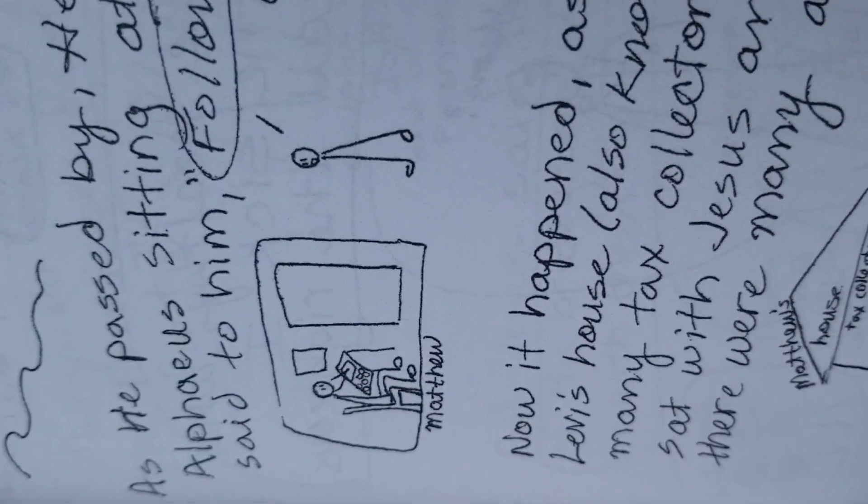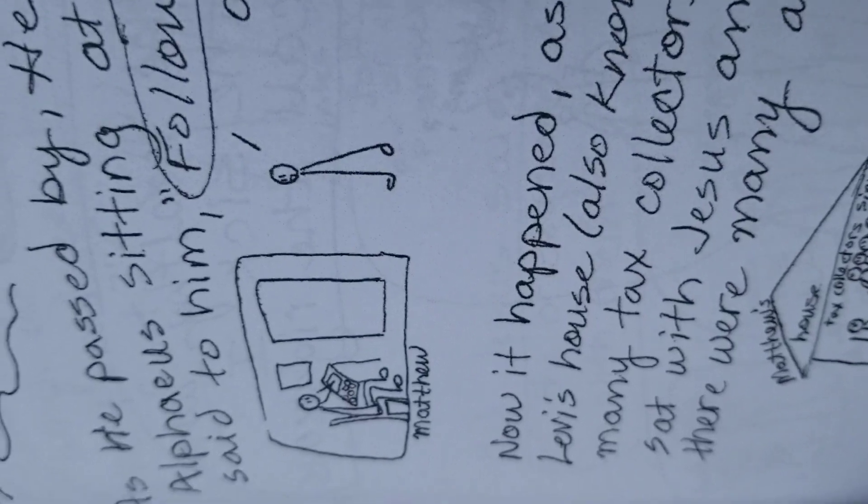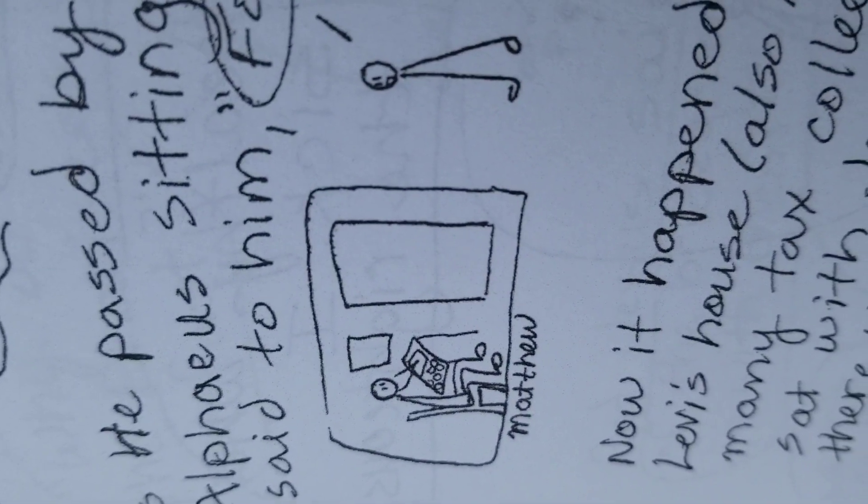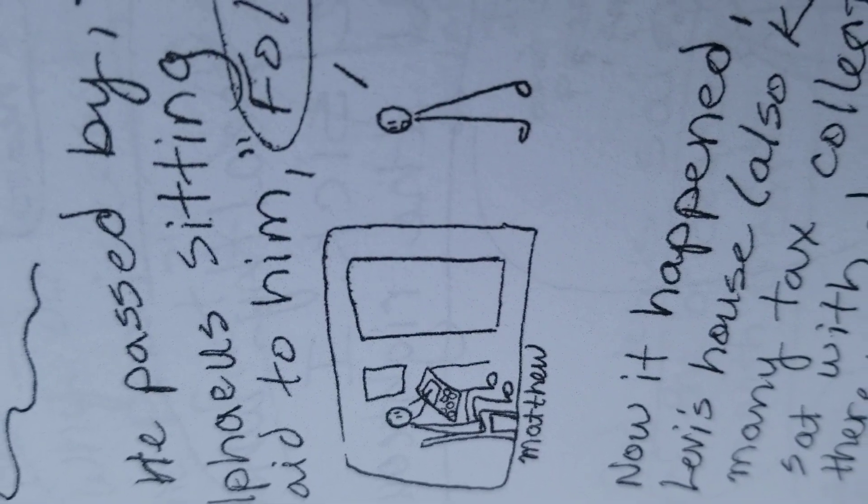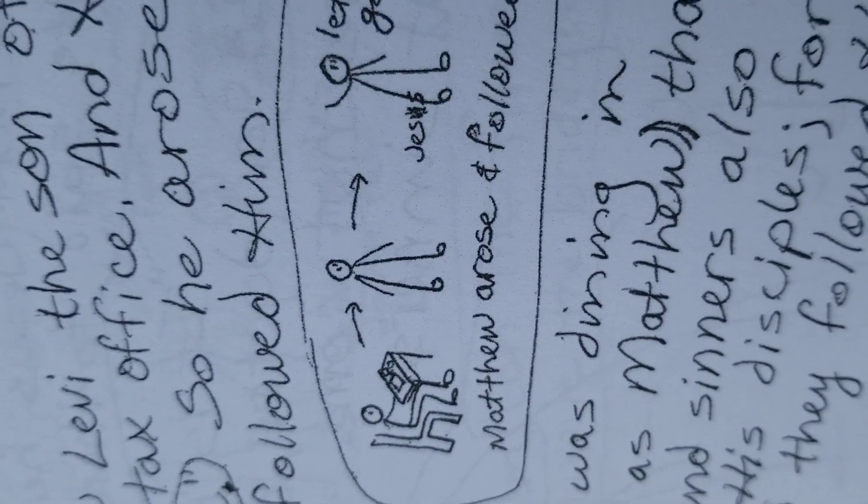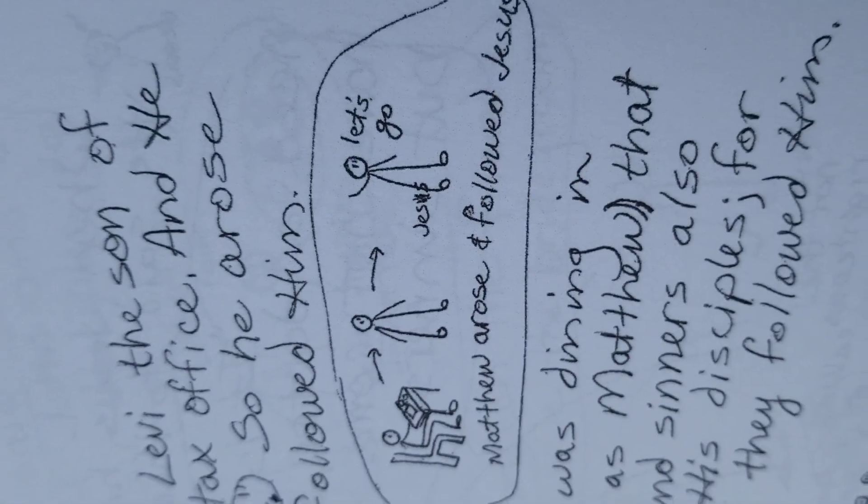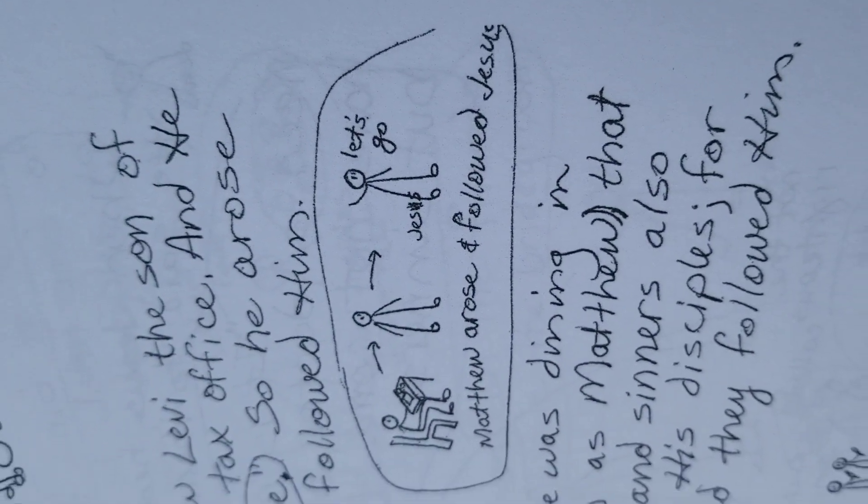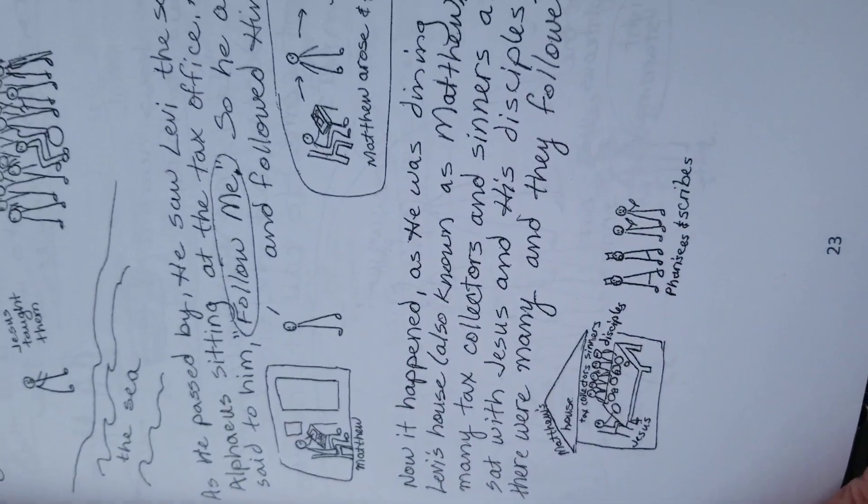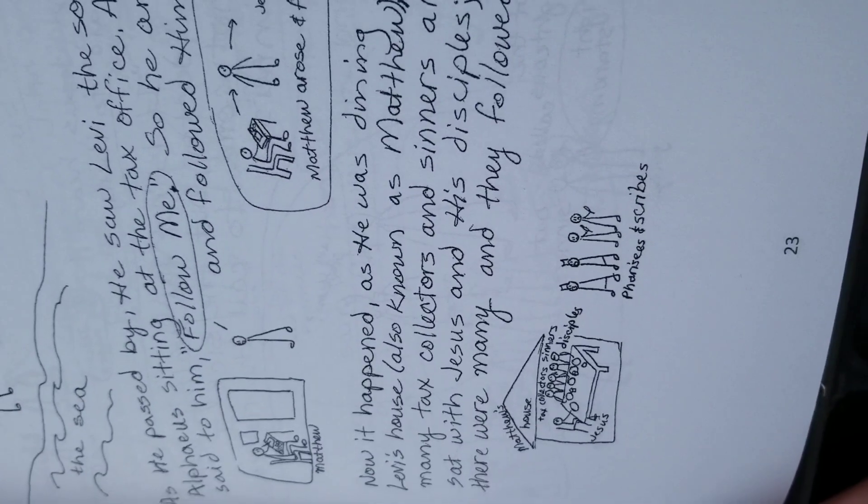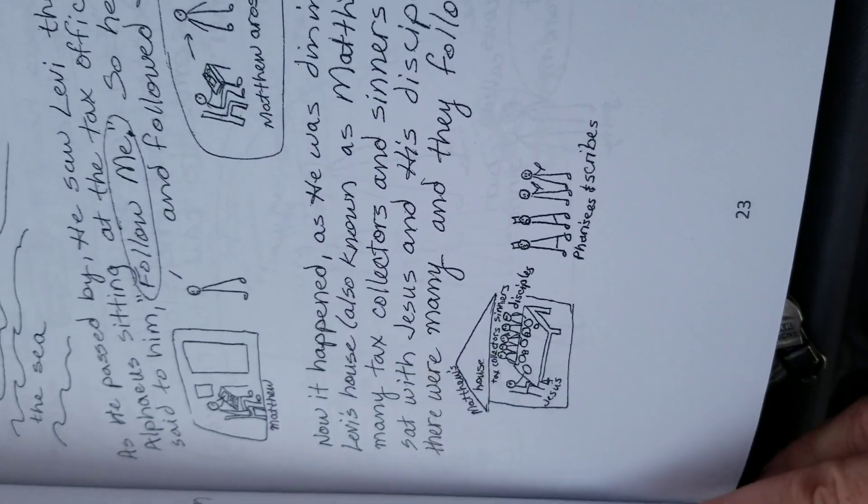So here's the tax collector. Jesus says, follow me. And the tax collectors, I believe, back then would often keep money for themselves, take money from others and keep for themselves. Matthew rose and followed Jesus. So I guess Alphaeus is another name for Levi. Levi and Matthew, they had different names.